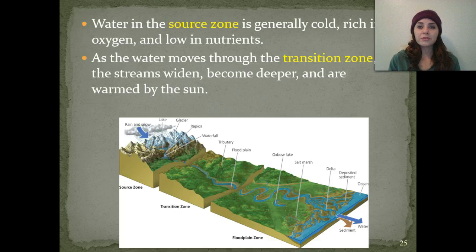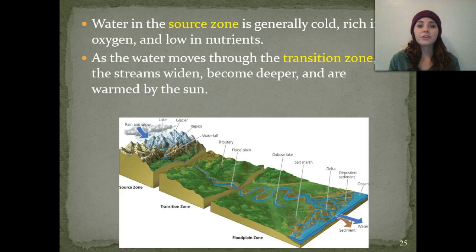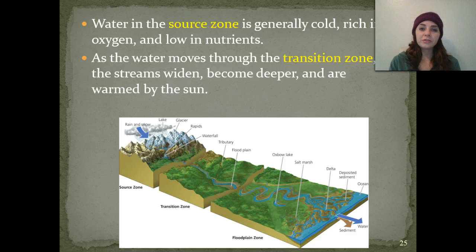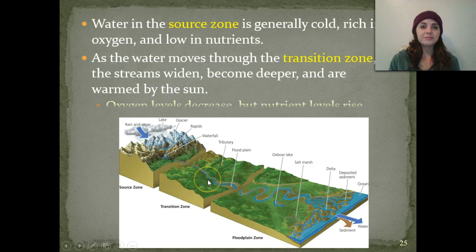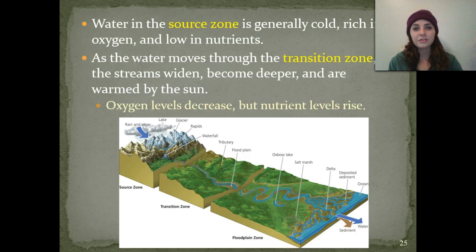Water in the source zone is generally going to be cold, rich in oxygen, and very low in nutrients. Sources include rain and snow, as well as glaciers and lakes. As that water moves through the transition zone, the streams start to widen, they become a little bit deeper, and they're warmed by the sun. Oxygen levels actually start to decrease, but the nutrient levels start to rise because they're starting to gain some runoff.